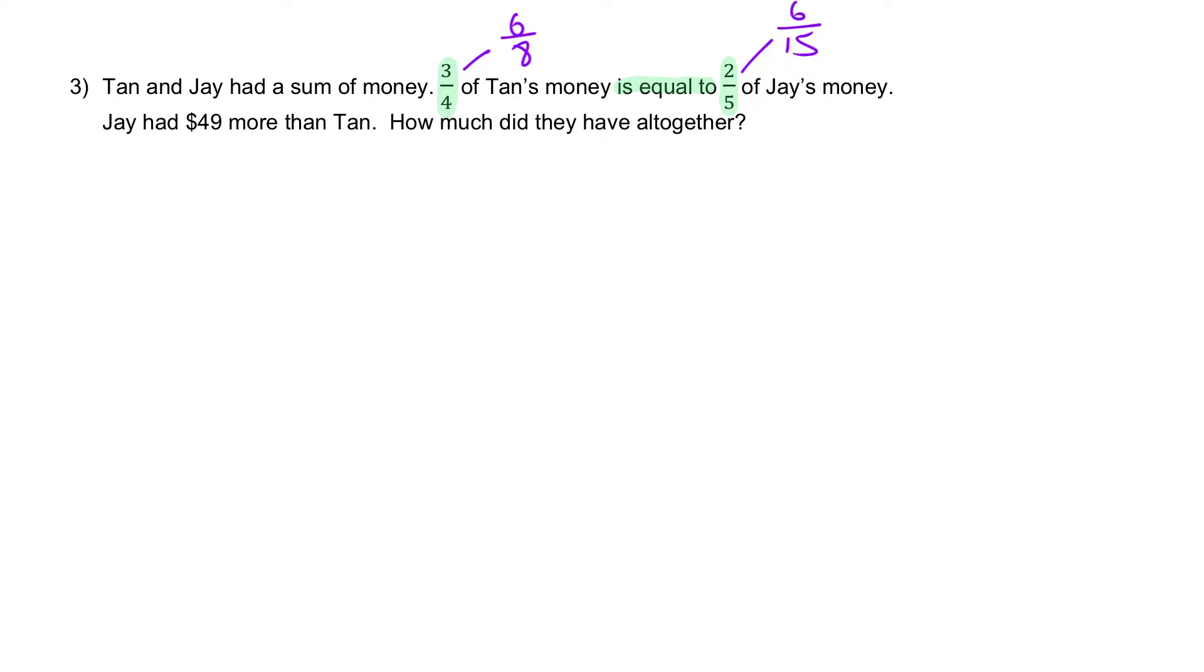What happens after they have the same numerator? We look at their denominator. The denominator will represent the individual total, which means Tan has eight units in total, Jay had fifteen units in total. This trick applies to all questions regardless if it's money, mass, or any other number of things, as long as number one: the question states a fraction is equal to another fraction. Number two: you will make their numerator the same by changing to its equivalent fraction.